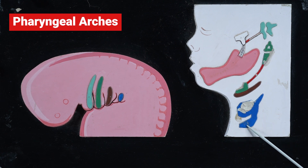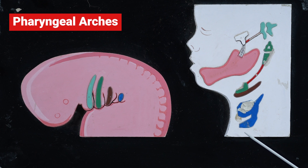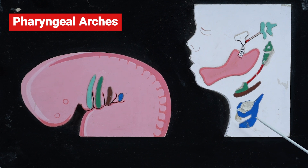The sixth arch cartilage gives rise to all other cartilages of the larynx except the epiglottis. This is regarding the cartilaginous derivatives.